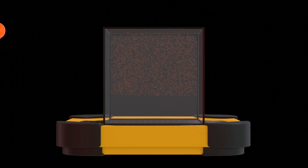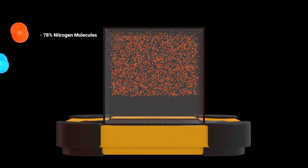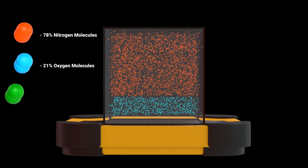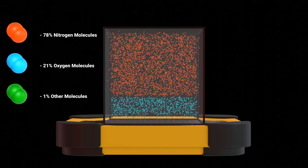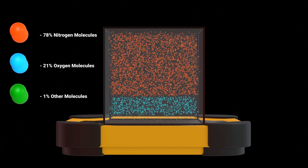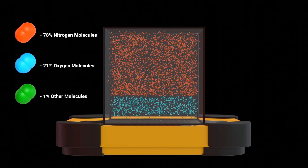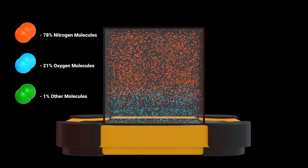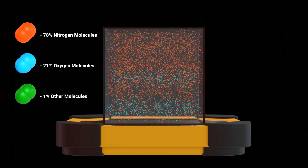About 78% of the air we breathe consists of nitrogen, 21% oxygen, and 1% several other trace substances. Since air is a vapor, these molecules are constantly zooming past each other.